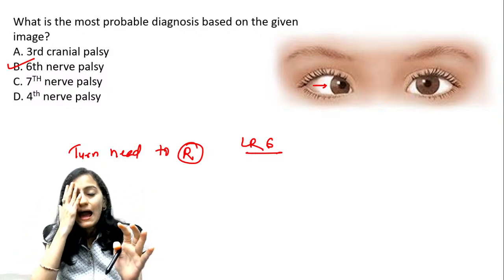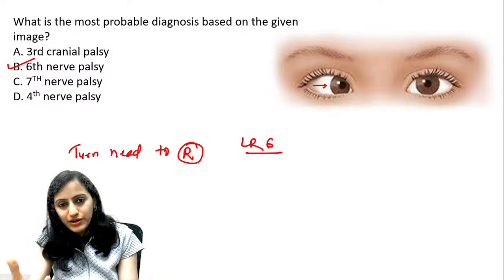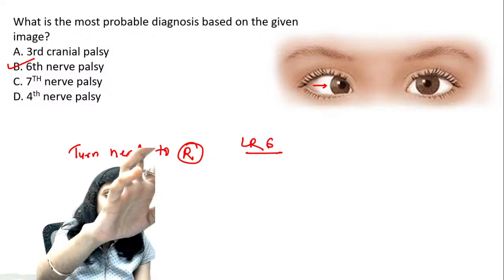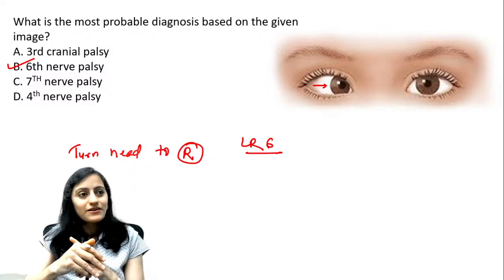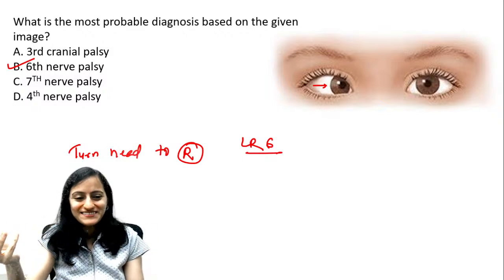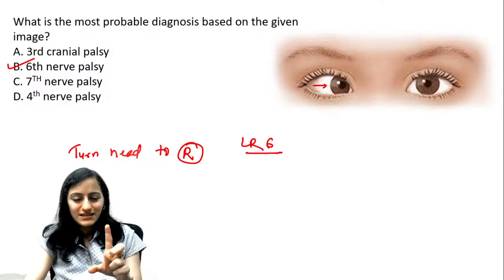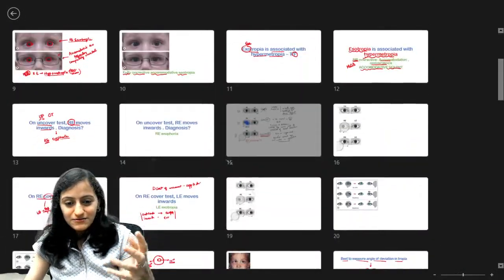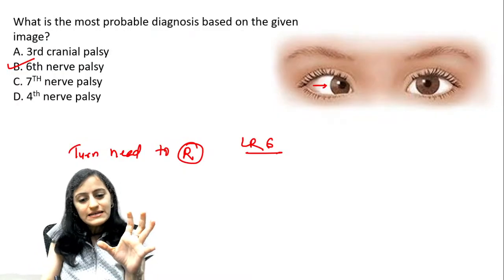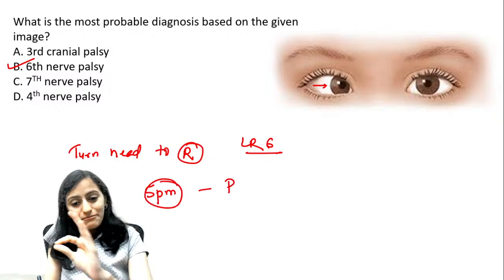To summarize differentiation: apparent squint vs. tropia — use the cover test. If apparent, there is no eyeball movement. If it is actually a manifest squint (tropia), covering the normal eye will show movement of the squinting eye. Unfortunately time has flown; I have a class at 10 a.m. on Unacademy. Don't worry — I'll give you the tricks for everything remaining, including the Park three-step test and other squint tests, in today's 5 p.m. class.